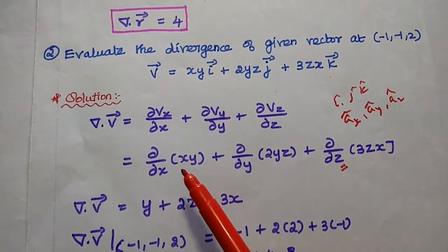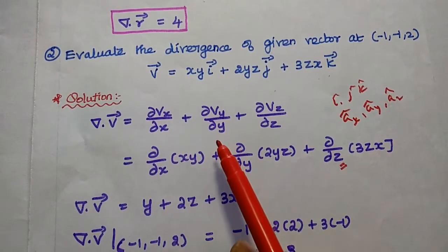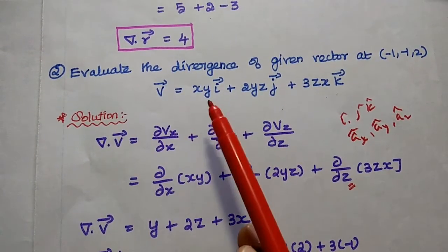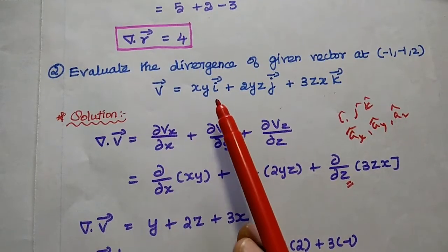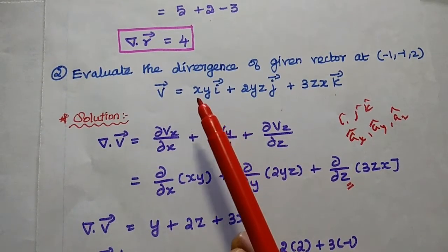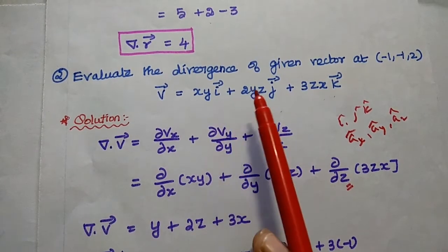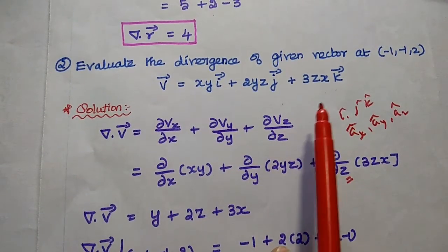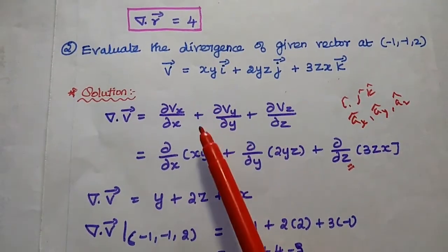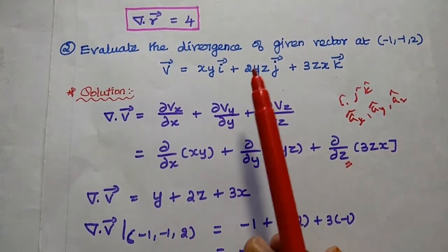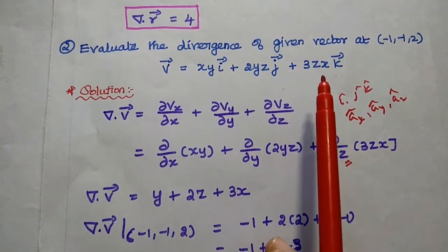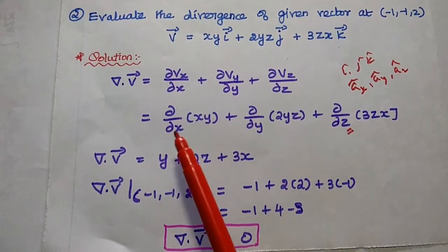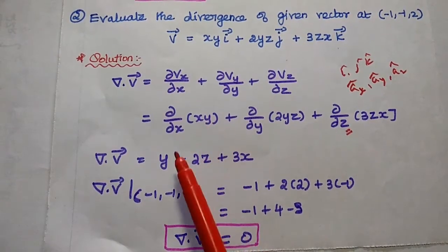Del dot V = ∂Vx/∂x + ∂Vy/∂y + ∂Vz/∂z. Here, Vx = xy (the i-direction component), Vy = 2yz (the j-direction component), and Vz = 3zx (the k-direction component). Differentiating Vx = xy with respect to x gives y as a constant, and the differentiation of x gives 1.